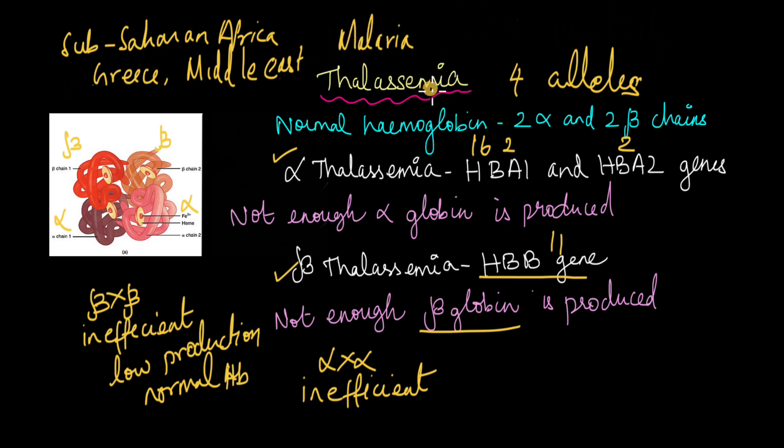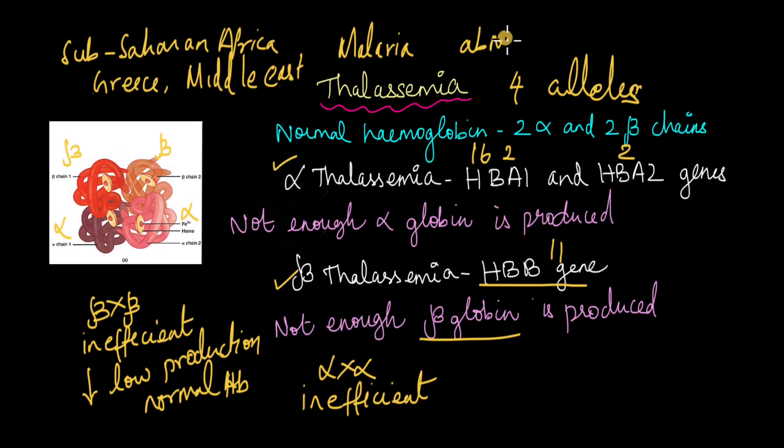Now how does thalassemia differ from sickle cell anemia? Because both are conditions that are affecting hemoglobin and the production of red blood cells. In thalassemia you have low production of hemoglobin. You don't have enough quantities of hemoglobin in the blood. But in the case of sickle cell anemia, you have hemoglobin but it is an abnormal hemoglobin.